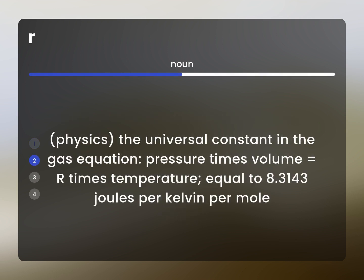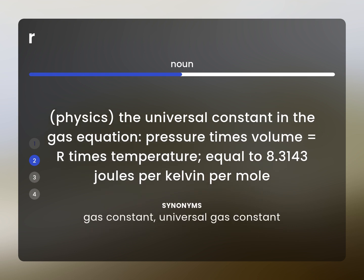Physics. The universal constant in the gas equation. Pressure times volume equals R times temperature. Equal to 8.3143 joules per kelvin per mole. Gas constant. Universal gas constant.